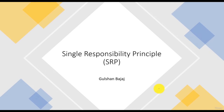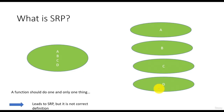Let's discuss the first design principle — Single Responsibility Principle in this chapter. Although we have already touched upon this. The first question is: what is SRP or Single Responsibility Principle? As we discussed in the past, if a function is doing multiple tasks, then it should be split into multiple smaller ones where each one is focused on doing one task.